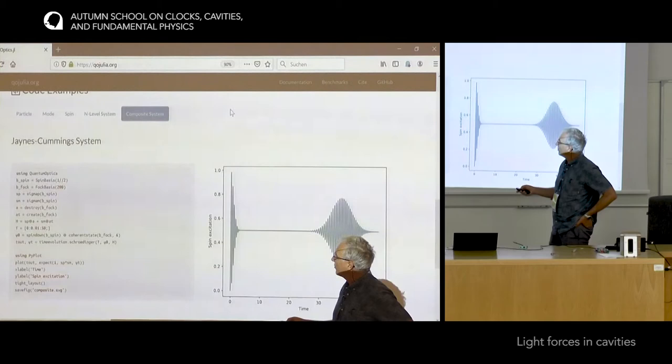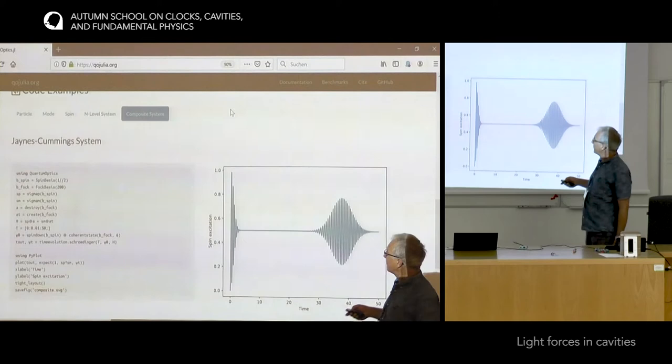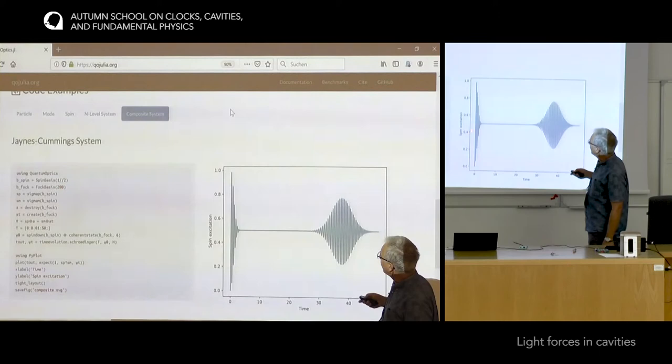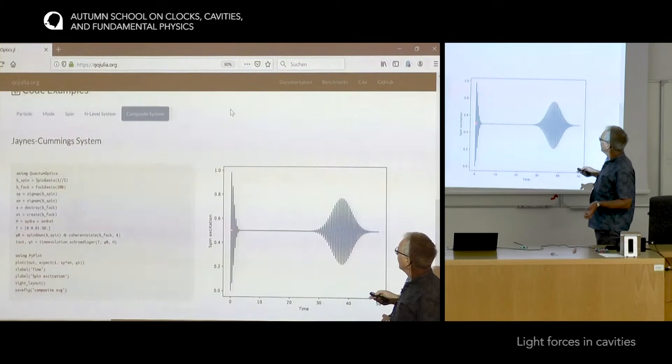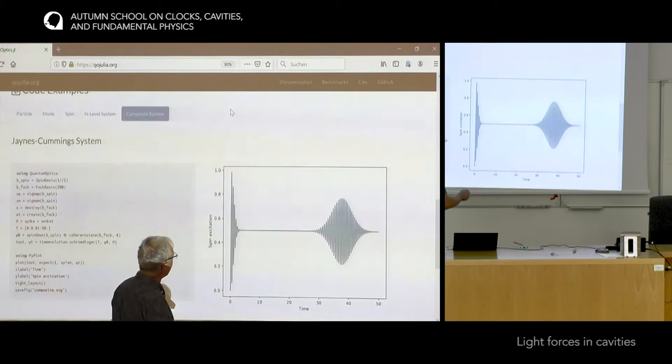It can also solve the master equation. As initial condition we take a coherent state and what we get is the well-known collapse and revivals. We saw these oscillations which for a fixed photon number go on forever. If you use a coherent state, they die out due to interference, but it's not damping because after waiting long enough, there will be a revival of these Rabi oscillations after a long time.